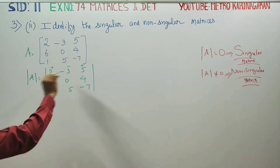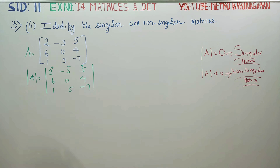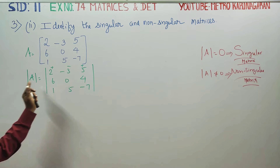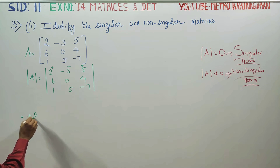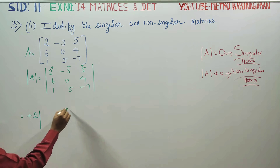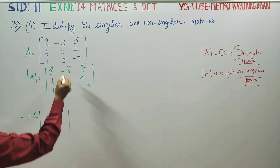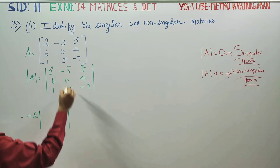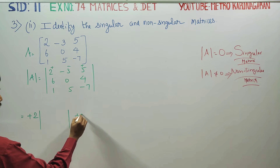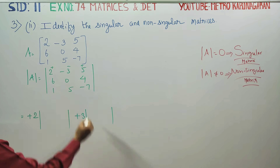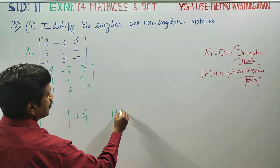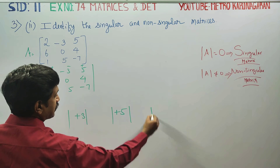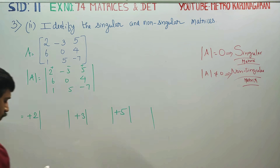I am going to expand this along R1, Row 1. Where you expand: plus 2 into minor, plus 3 into minor, plus 5 into minor.